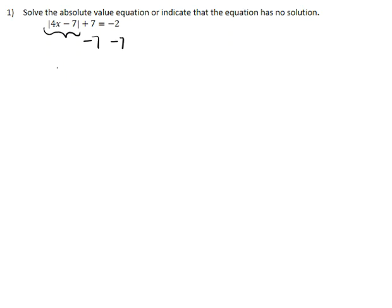Once you subtract 7 from both sides, you'll get the absolute value expression |4x - 7| = -9.